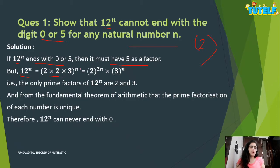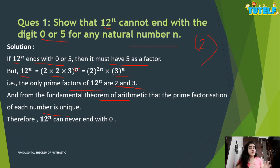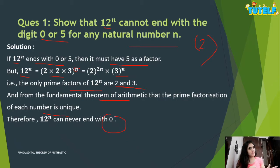We write 12^n as (2 × 2 × 3)^n, which equals 2 raised to power 2n into 3 raised to power n. So the only prime factors of 12^n are 2 and 3. From the Fundamental Theorem of Arithmetic, prime factorization is unique, meaning 12^n cannot have 5 as a prime factor, so it will never end with digit 0 or 5.